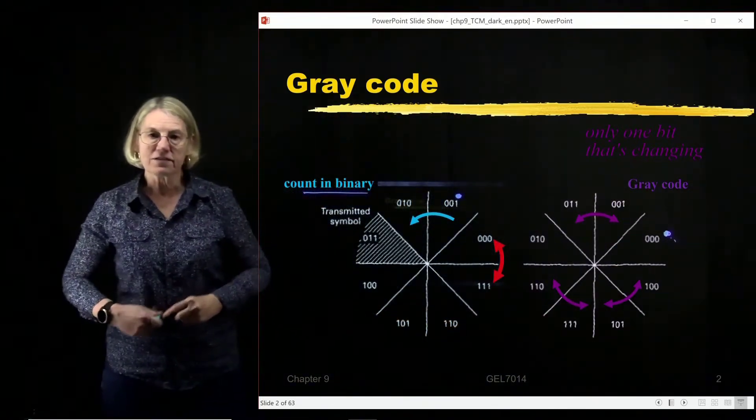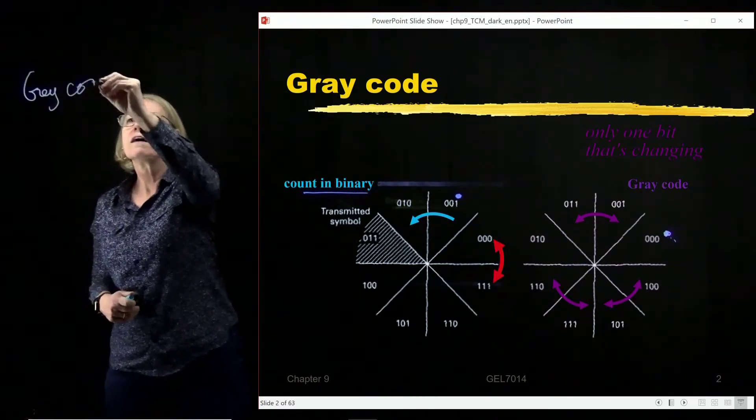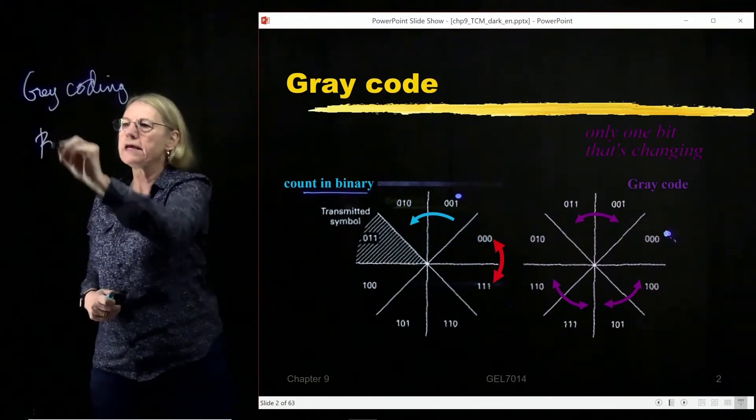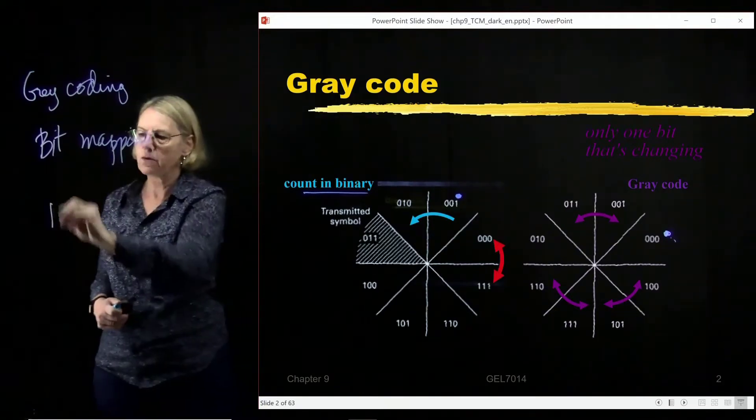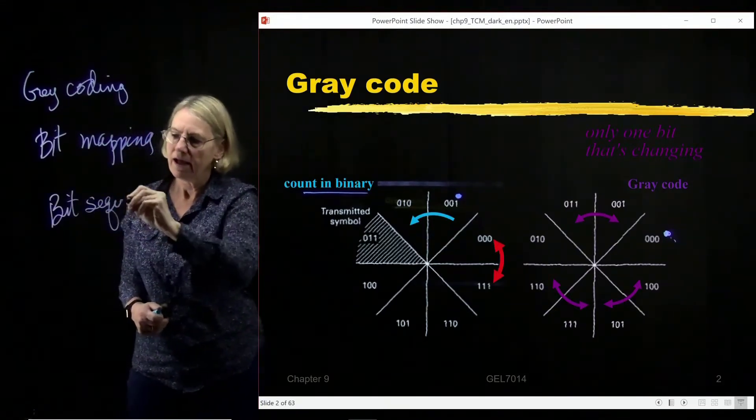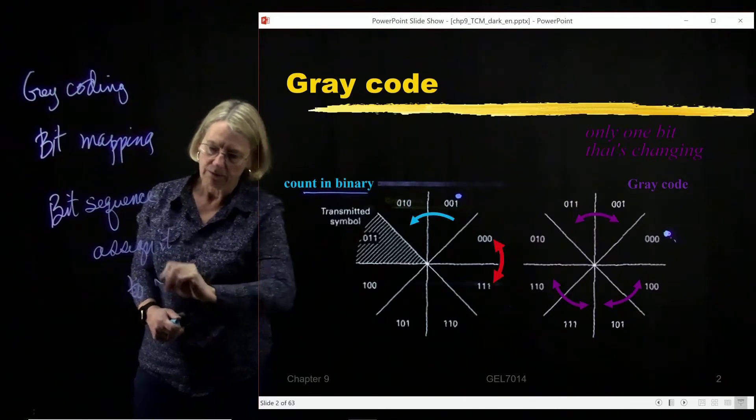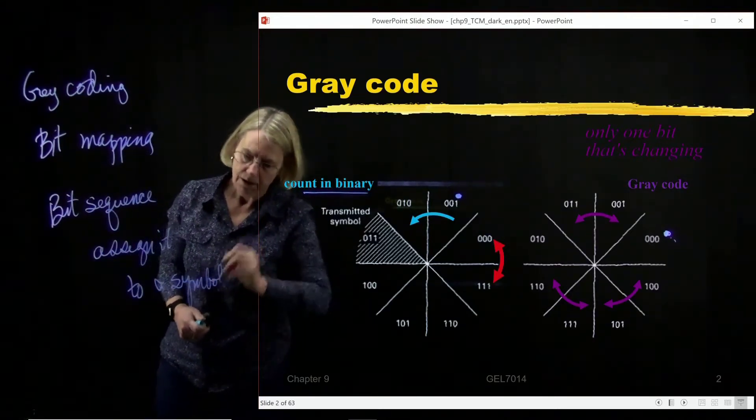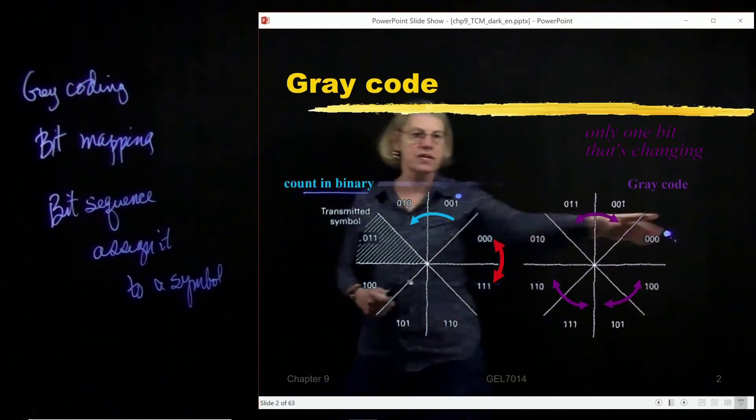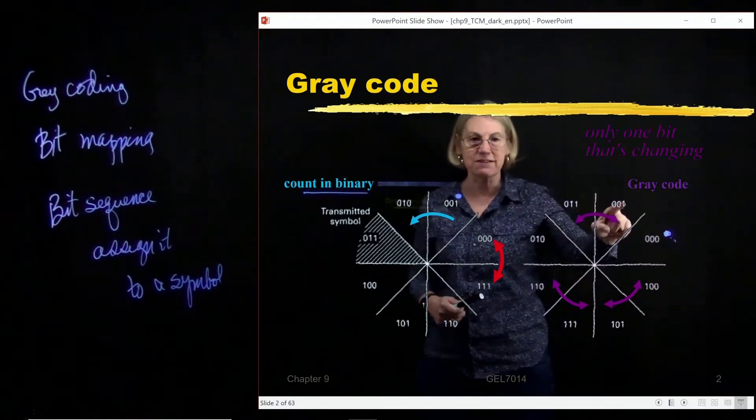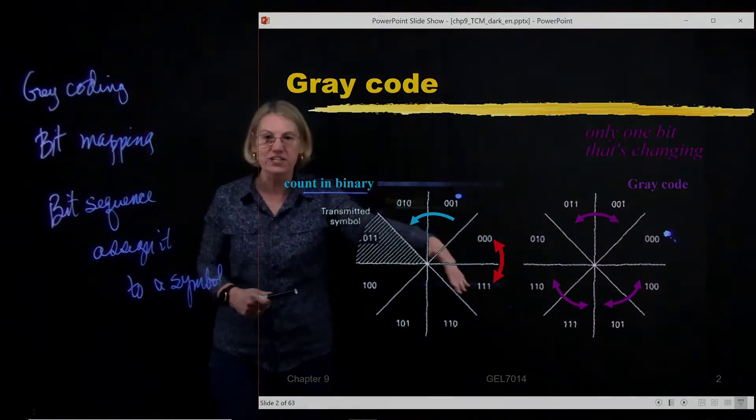So gray coding is an assignment or bit mapping, is essentially a bit mapping by which I mean we take a bit sequence and we assign it to a symbol. So the mapping is for each one of these eight symbols. Here I have a mapping. I have a specific binary sequence which is associated with each one of the symbols in this constellation of eight symbols.